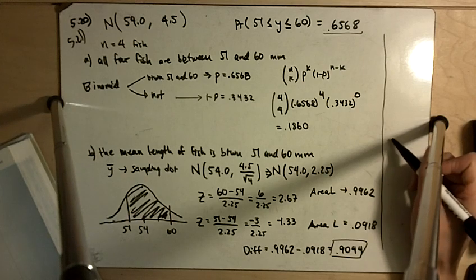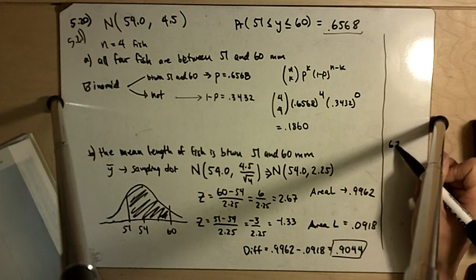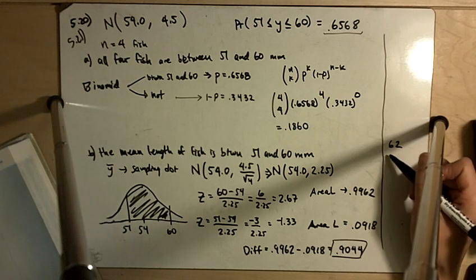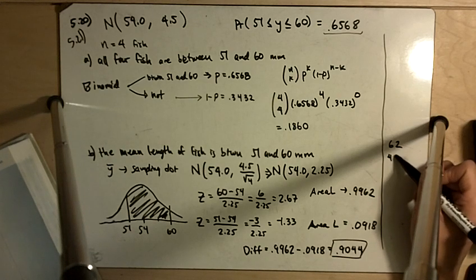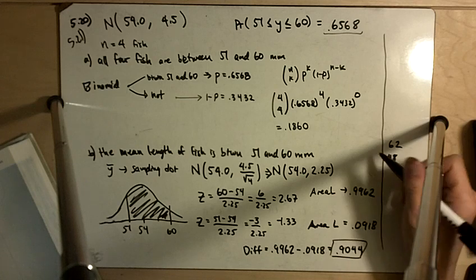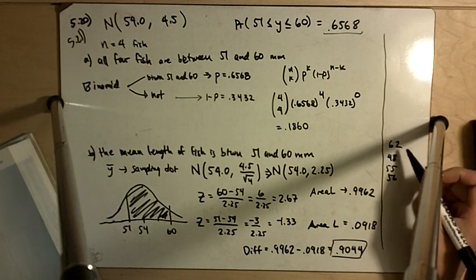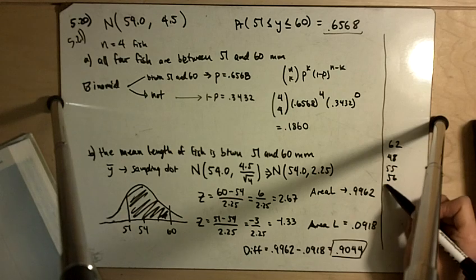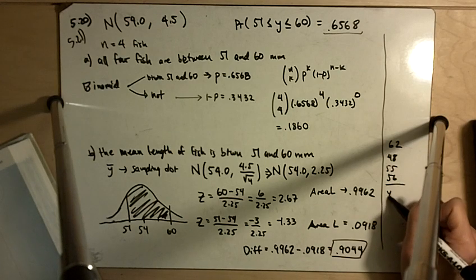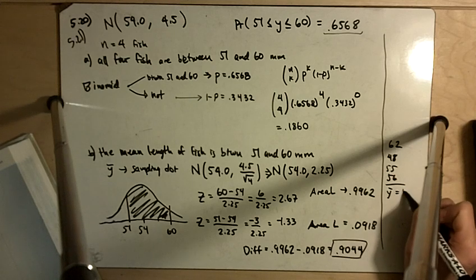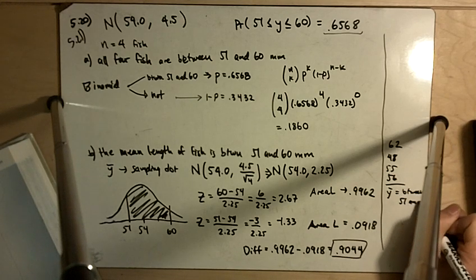So like for part B, you can have a fish that's 62 and then if you also have a fish that's 48, and then you have a couple of fish in between 55 and 56, the average here is going to be between 51 and 60. I don't know what it's going to be, but it's going to be between 51 and 60.